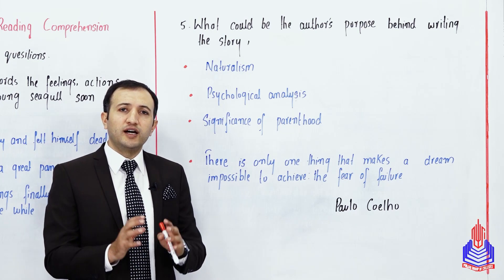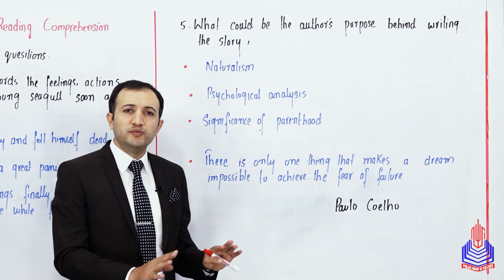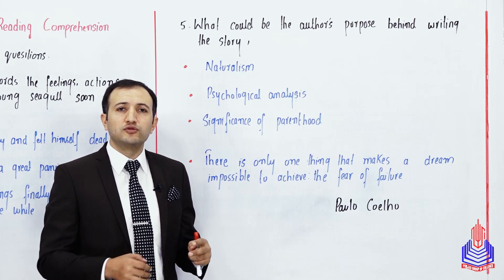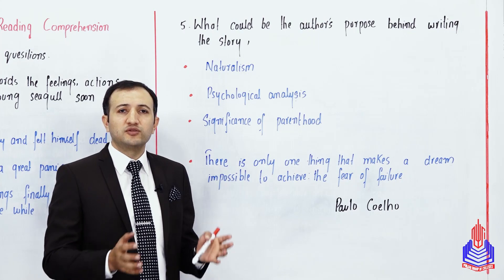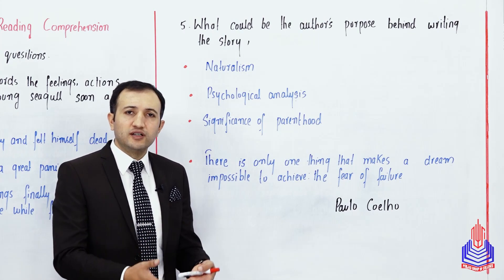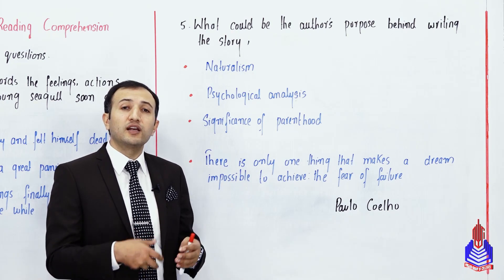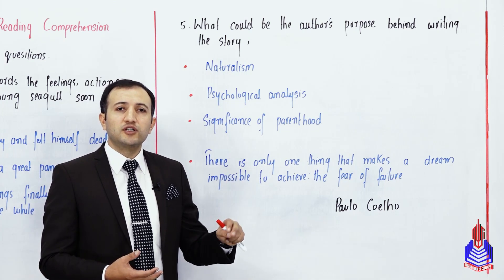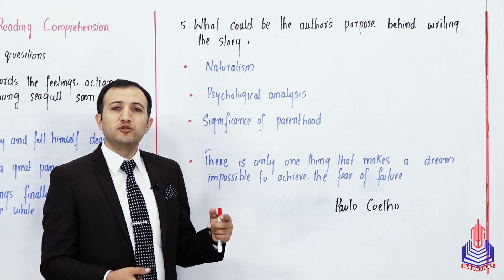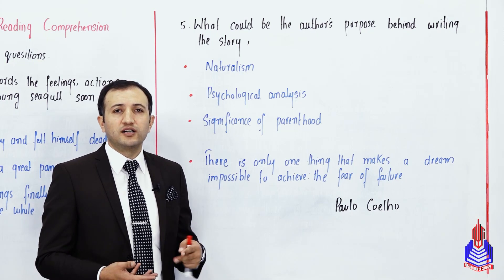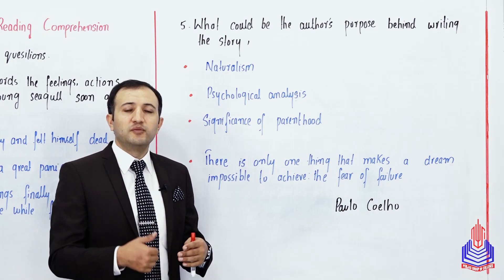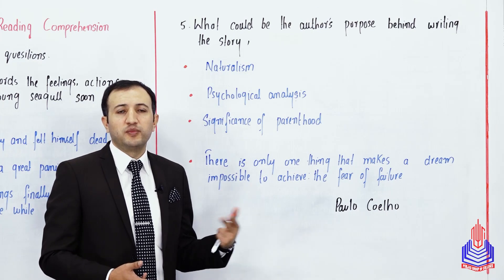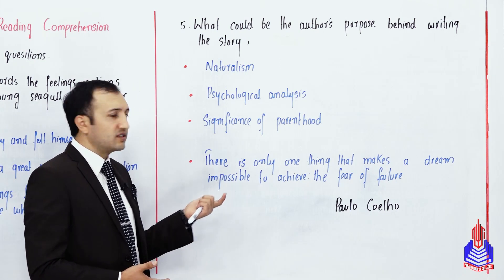Third purpose: significance of parenthood. The author shows how parents nurture — when the young seagull was weak and feeble, unable to eat or move, parents provided food, shelter, and built a nest, hatched the eggs and raised him. But at a certain point in life they provoke him to fly — reprimanding him, frightening him — and finally he is successful in his plunge and begins to fly.